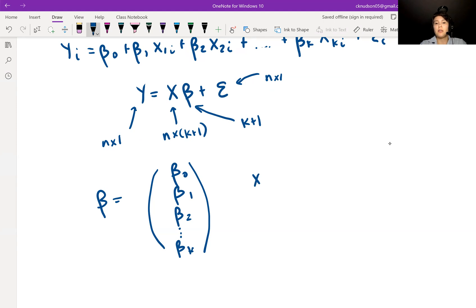And now x still is going to have this first column of ones. And the second column is still going to be the data for the first variable. So we'll have x11, x12, x13, all the way down to x1n. So that's our data for the first variable. Then we have the data for the second variable. The first person, the second variable the second person, second variable third person, all the way down, second variable nth person.